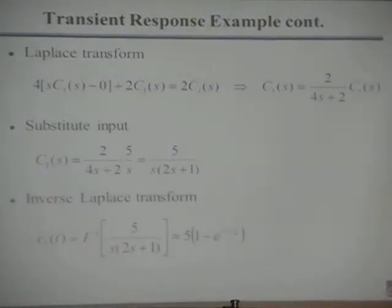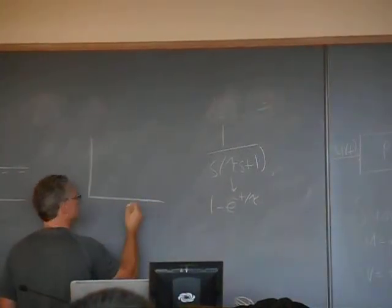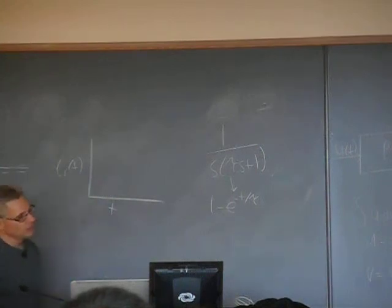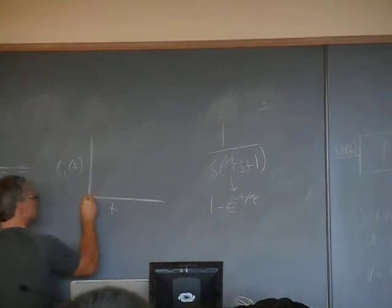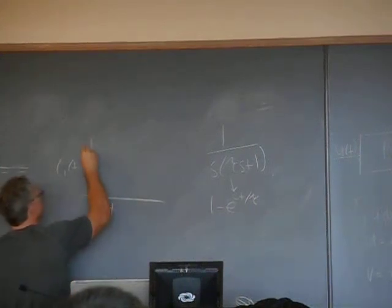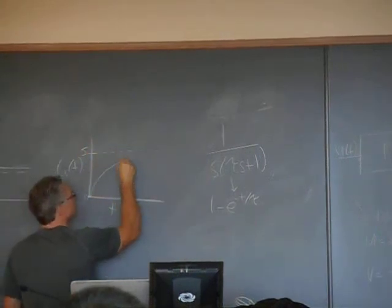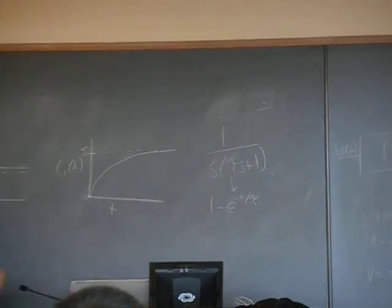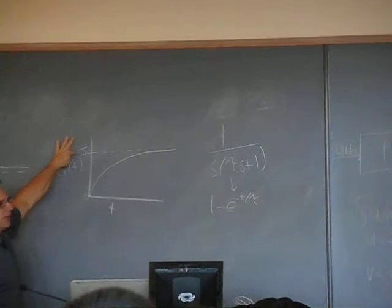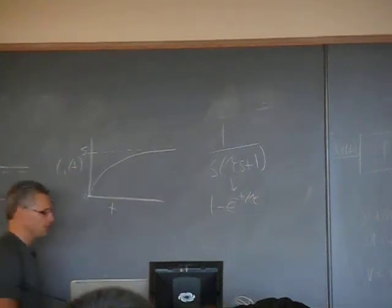What does that look like? First of all, it satisfies the initial condition. This is c1 t versus t, the output. If we look at the solution, you evaluate that at time equals zero, it starts at zero. That's good. And if you look at where it goes, when time gets large, the second term goes to zero, so it just goes to 5. It's going to exponentially approach the answer. It makes sense. We start at zero, and eventually the outlet concentration is going to equal the inlet concentration. So the inlet concentration was 5.